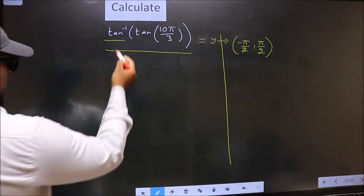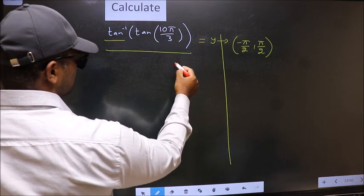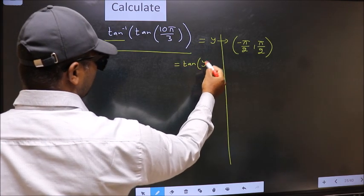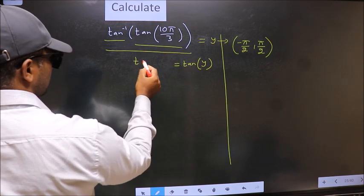Next, shift tan inverse to the other side. It will become tan(Y), and this side remains unchanged.